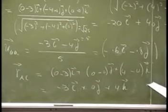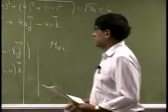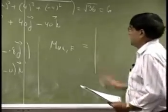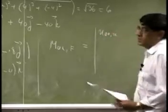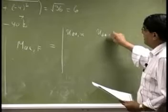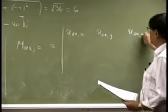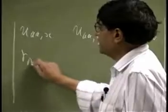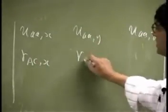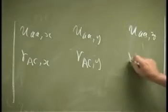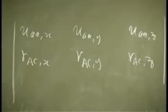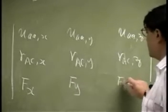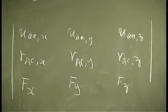And then if I write MAA, and that's because of the force F, this is going to be UAA the X component of that, UAA the Y component of that, UAA the Z component of that. That's the first row of the determinant. Then you have RAC the X component of that, then you have RAC Y component of that, then you have RAC the Z component of that. And finally you have the third row, which is FX, FY, and FZ. And that's the equation I gave you in the beginning of the lecture.